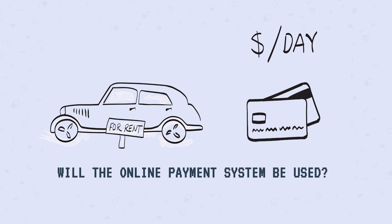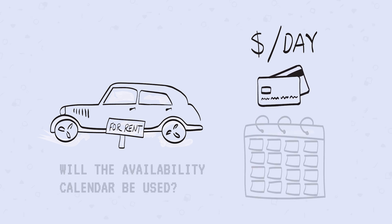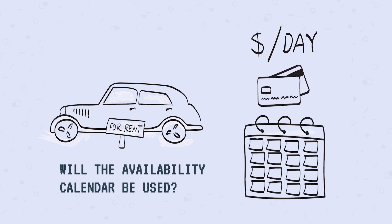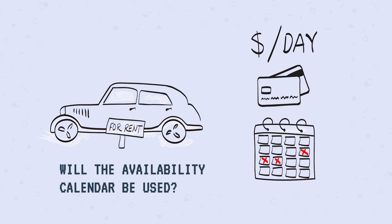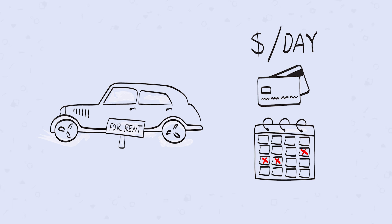You definitely want to use online payments, since you want to offer your users a secure way to make purchases and of course collect commission on the transactions yourself. And yes, you want to use the availability calendar to make it easy for both providers and customers to automatically keep track of whether a car is available or not. Depending on how you answer these questions, the settings of your order type may be completely different.